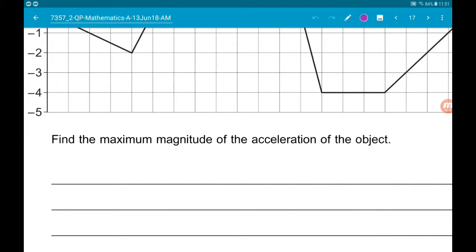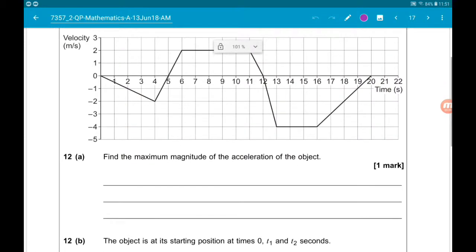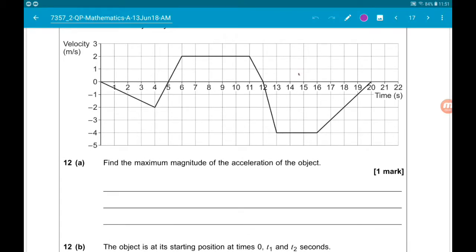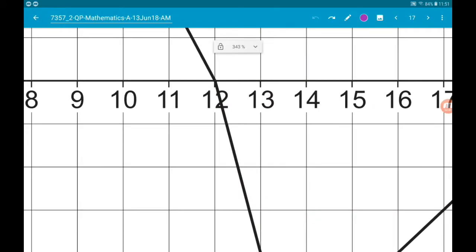So on a velocity-time graph, acceleration is the gradient of the graph. So we need to find the steepest section, which is gonna be this bit.